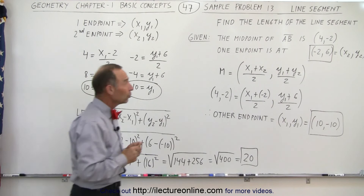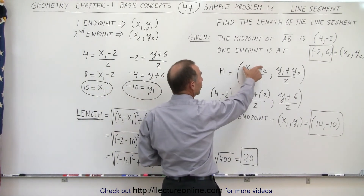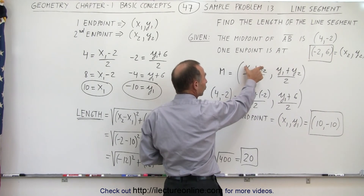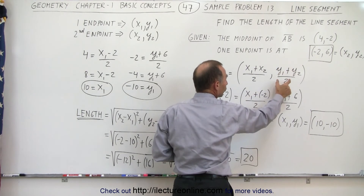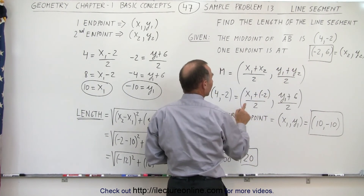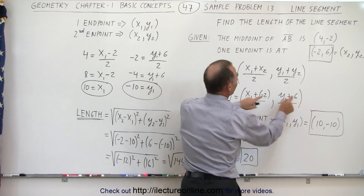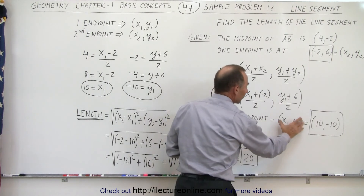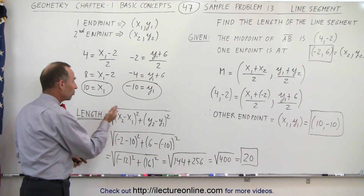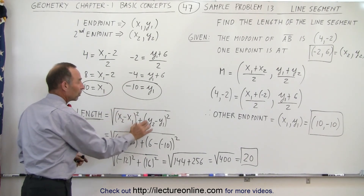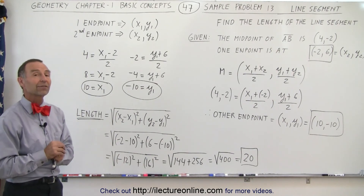The way we found that was to use the midpoint formula: add the two x-coordinates divided by 2, and add the two y-coordinates divided by 2. We didn't know x1 and y1, but we knew the other endpoint (-2, 6) and the midpoint. From that we found the other endpoint, and then used the distance formula — the square root of the difference in x-coordinates squared plus the difference in y-coordinates squared — to find the length of the line segment.